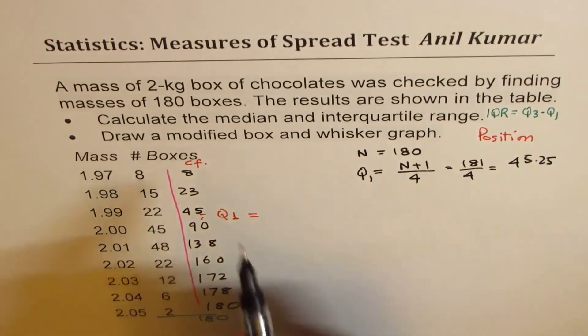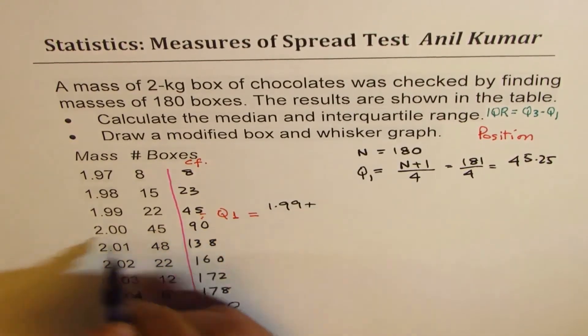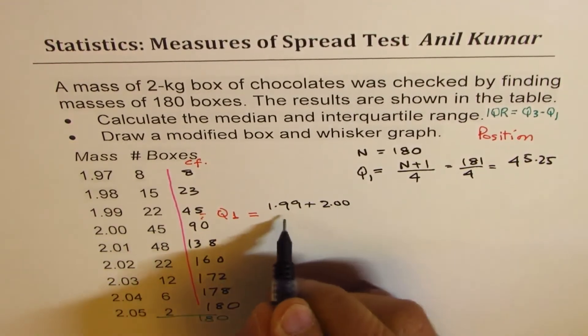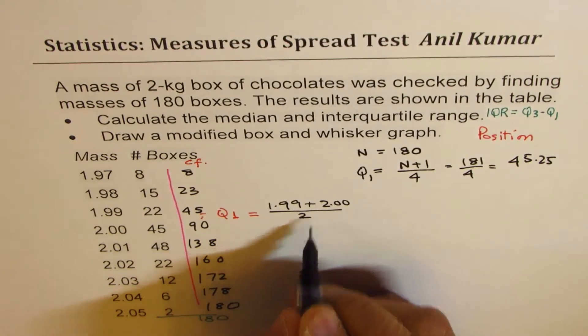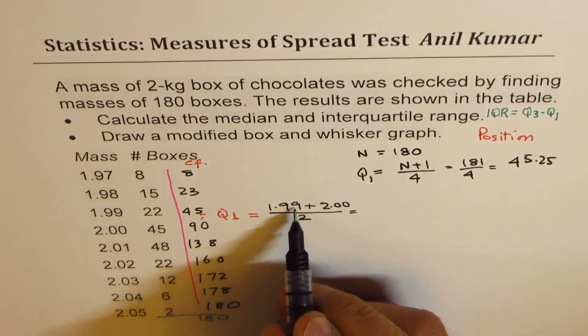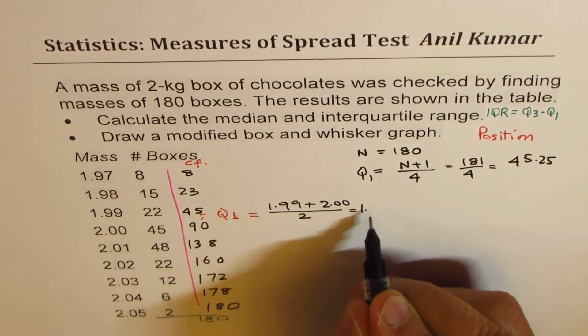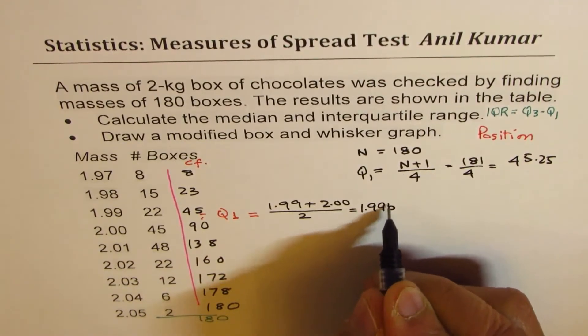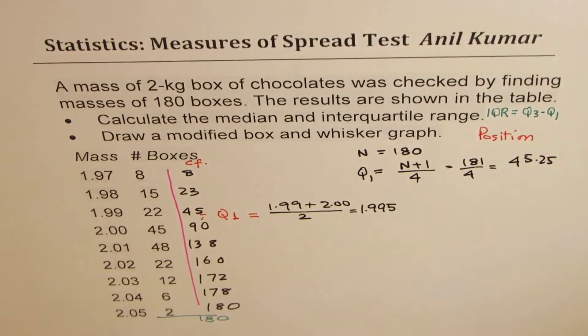So Q1 is indeed equal to we will add 1.99 to 2.00 divided by 2, and that indeed will be 1.995. So that becomes Q1.